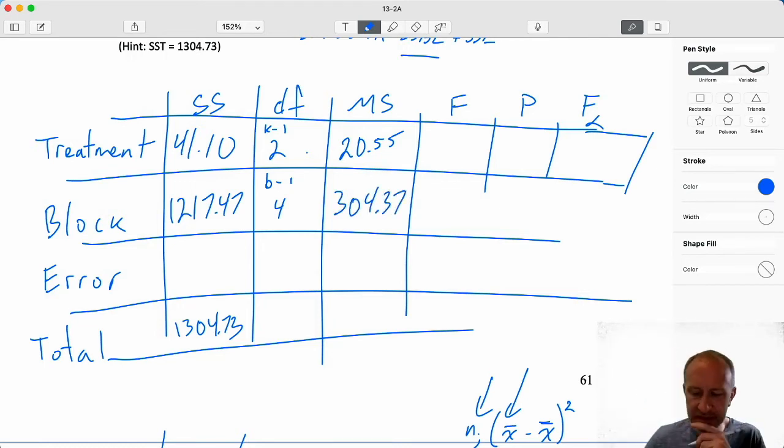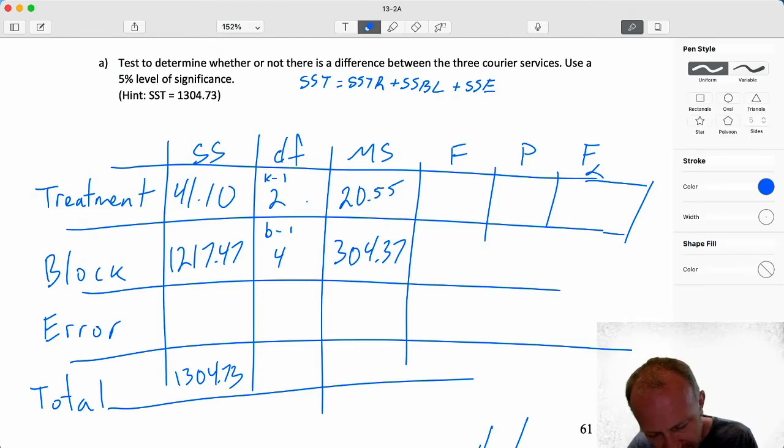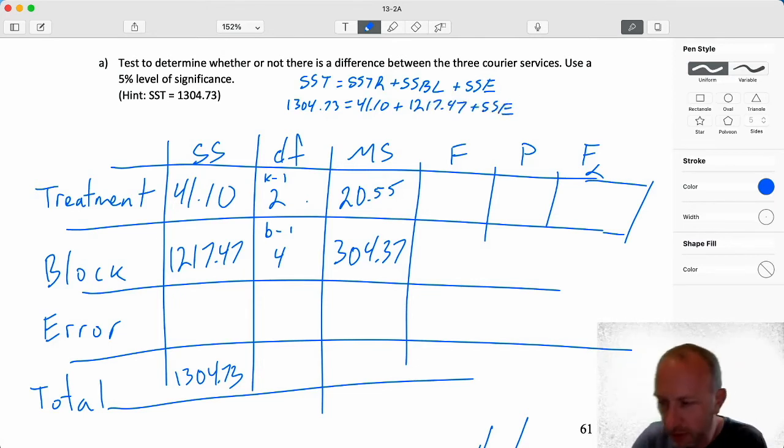1217.47 divided by four. This mean square blocks, you know, we calculate it. But I'm not going to actually use it for anything. It's just part of a full, a complete ANOVA table. Now I can calculate SSE because again, here I've got all of these components. I know SST is 1304.73. SSTR is 41.1. SSBL is 1217.47. So I'm just going to use that to solve for SSE. That's 1304.73 minus 1217.47 minus 41.1 and that gives me an error 46.16.